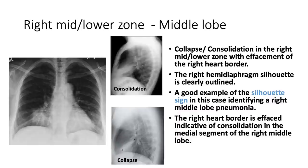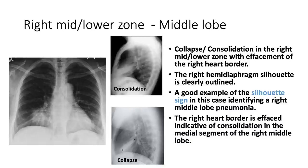There is a lesion on the right lower zone — a slightly homogeneous opacity on the right paracardiac area, due to pneumonia. You can call it right lower zone consolidation, but a lateral view tells you it is in the middle lobe, so you can call it right middle lobe consolidation. The same picture can be due to collapse, but consolidation is a larger lesion because it contains edema, whereas collapse produces a smaller lesion due to loss of lung tissue.